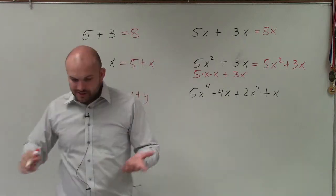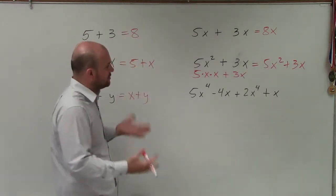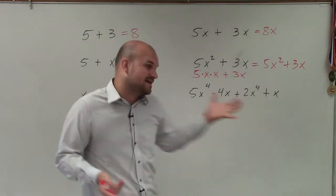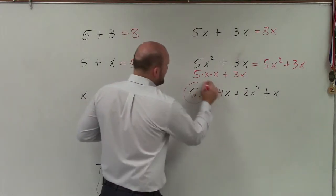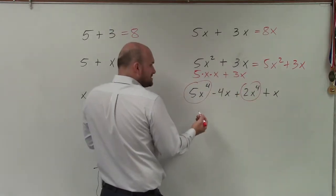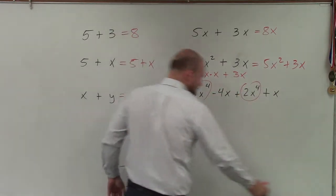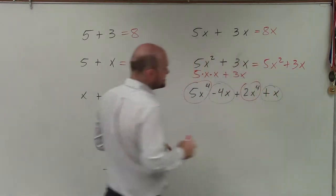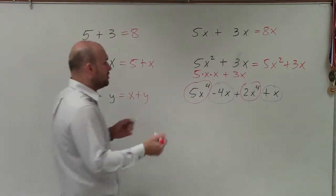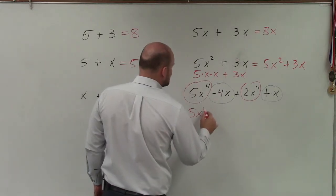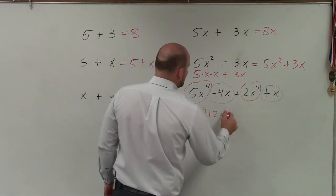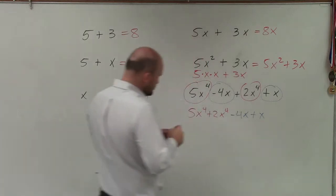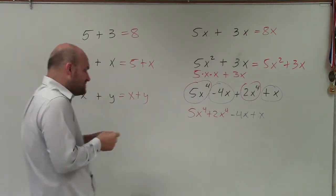So lastly, what I'm going to do is just kind of go over when we do have an expression that we're looking into combining like terms. Basically, the best thing I like to do is group your like terms together. You see that I have this 5x to the fourth and 2x to the fourth. Those are like terms. Whereas, over here, I have a negative 4x and a positive x. Those are both like terms, right? So all I'm going to do is just rewrite my equation. 5x to the fourth plus 2x to the fourth minus 4x plus x.